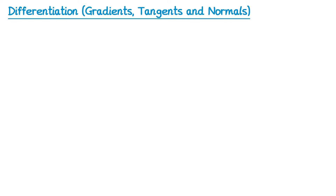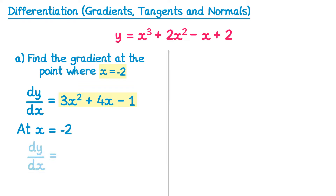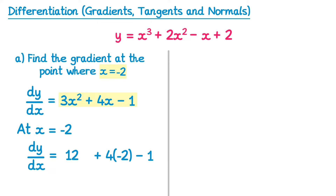Now let's try some questions. For part a, we need to find the gradient at the point where x equals negative 2. We differentiate: dy by dx equals 3x squared plus 4x minus 1. Substituting x equals negative 2: 3 lots of negative 2 squared plus 4 lots of negative 2, take away 1 gives 12 minus 8 minus 1, which equals 3. So the gradient at x equals negative 2 is 3.